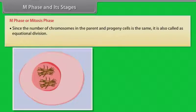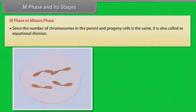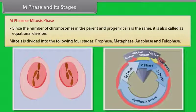M phase is also known as mitosis phase. Since the number of chromosomes in the parent and progeny cells is the same, it is also called equational division. Mitosis is divided into the following four stages: prophase, metaphase, anaphase, and telophase.